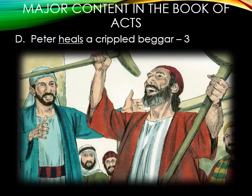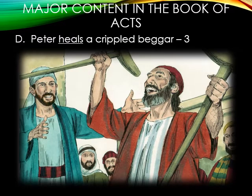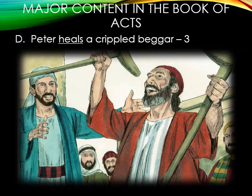Letter D: Peter heals a crippled beggar. Luke records that at around 3 p.m., Peter and John went into the temple and saw a man who was born lame, begging for money at the gate called Beautiful. Peter tells the man he had no money, but had something much better — the ability to heal him. He was immediately healed, which amazed the Jews. Peter then challenged them all to repent and be converted to have their sins blotted out, because they had killed the only just and righteous healer, Jesus Christ.